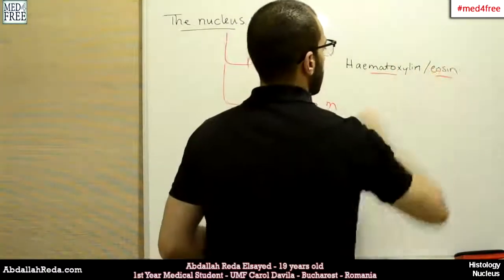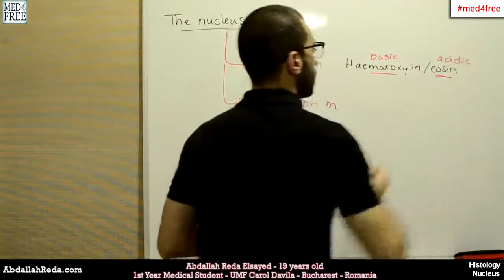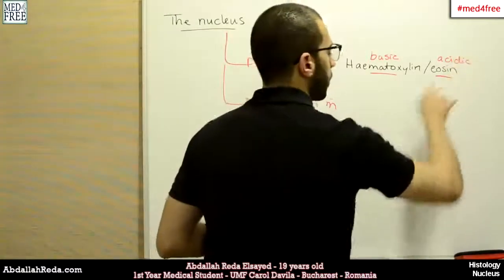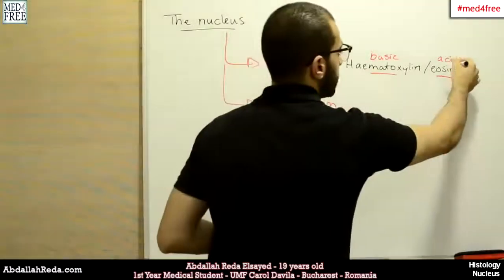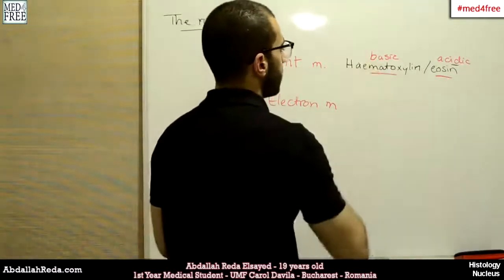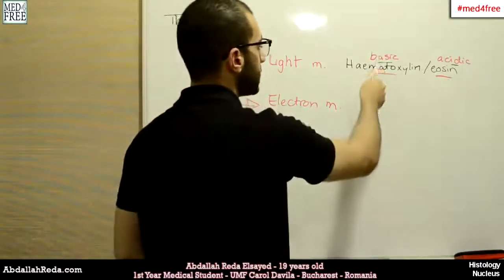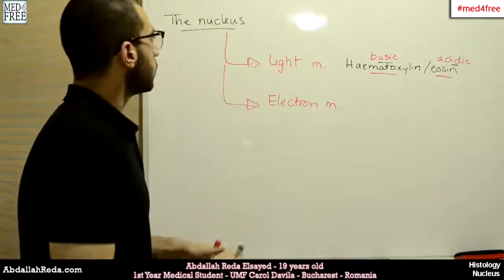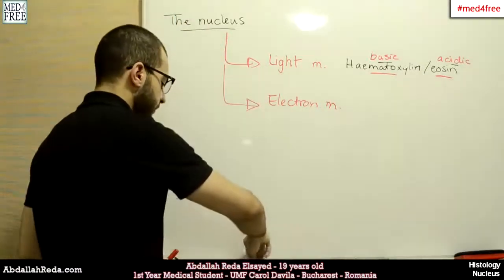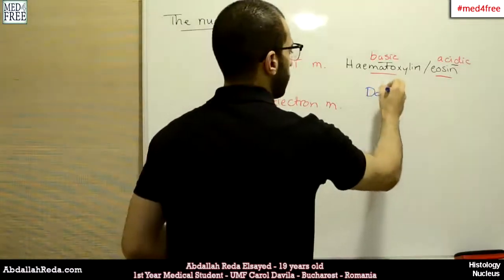Hematoxylin is basic while eosin is acidic. There are organelles inside the cell which are eosinophilic, meaning they are basic organelles, so they will be affected by the acidic eosin. On the other hand, there are organelles which are acidic and they will be affected by the basic hematoxylin. These organelles are called basophilic because they love bases. The nucleus is one of these organelles — it is basophilic and is affected by hematoxylin, which stains the nuclei a dark violet color.